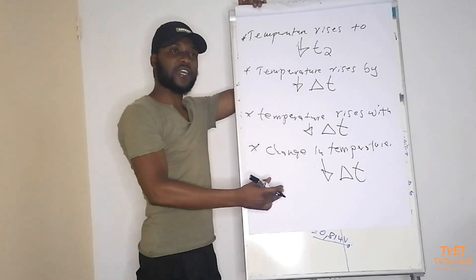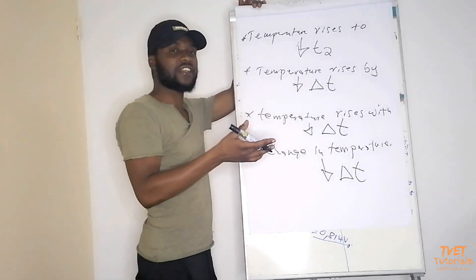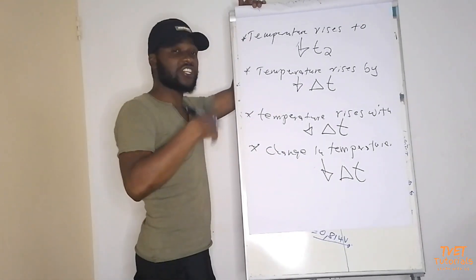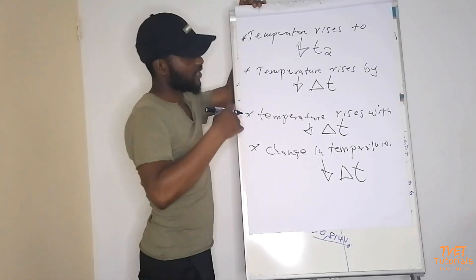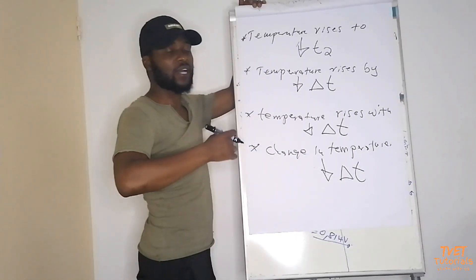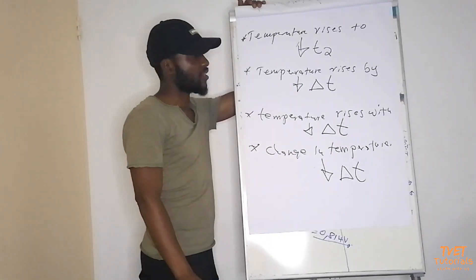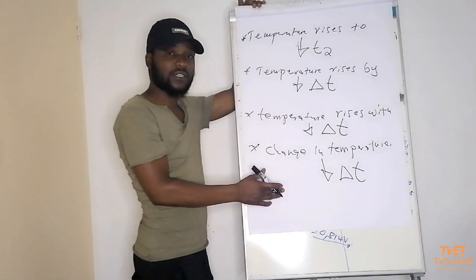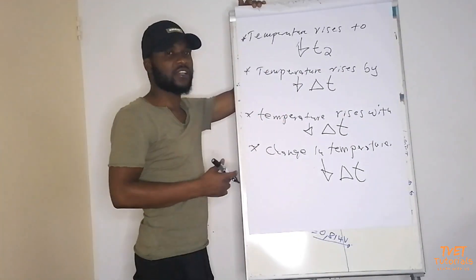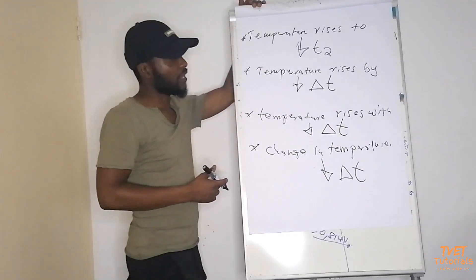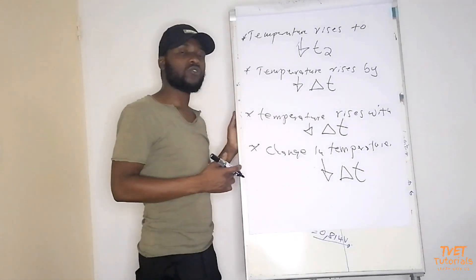Even when dealing with linear expansion, you'll be given the final length, the initial length, and the change in length. You must know which one is which — initial length, final length, or the change in length. If you know this and the equation to apply, you won't have problems.